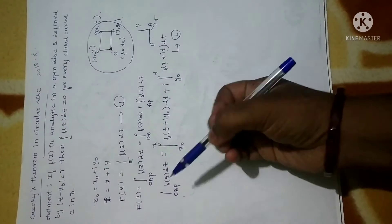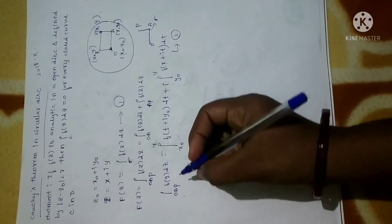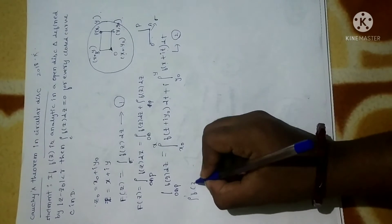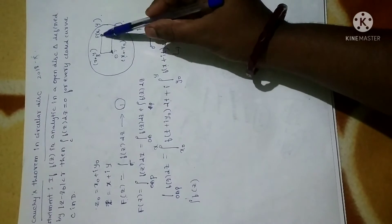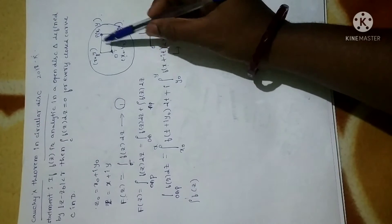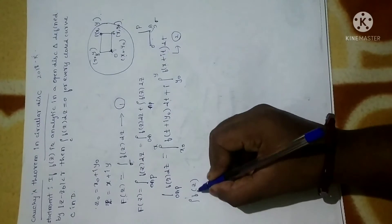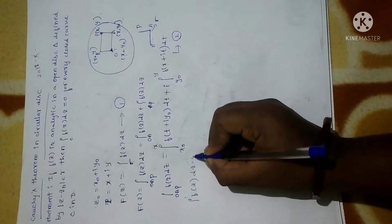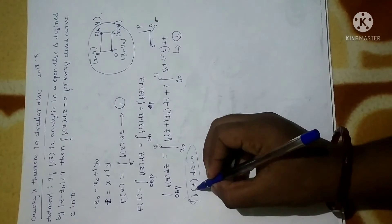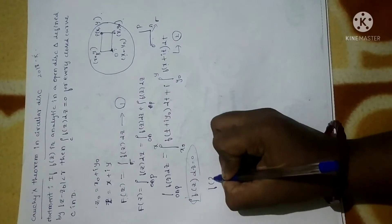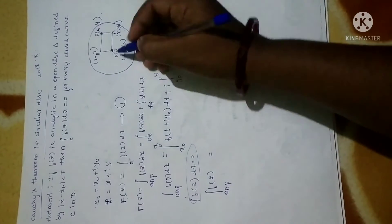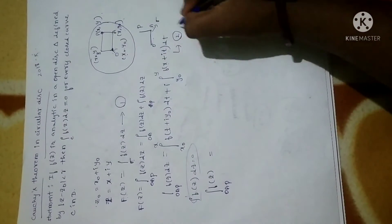By Cauchy's theorem for a rectangle, the integral of f(z) along the boundary OAPB — noting that OAPB forms a rectangle — equals 0. Therefore, integrating f(z) along OAP is the same as integrating along OBP.